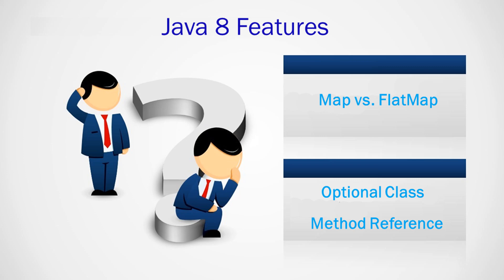The Optional class was introduced in Java 8. It is basically used to avoid NullPointerExceptions. For example, using generics I can have an Optional of a list of integers, and if any null occurs, the Optional class can handle that — it is used to avoid NullPointerException.